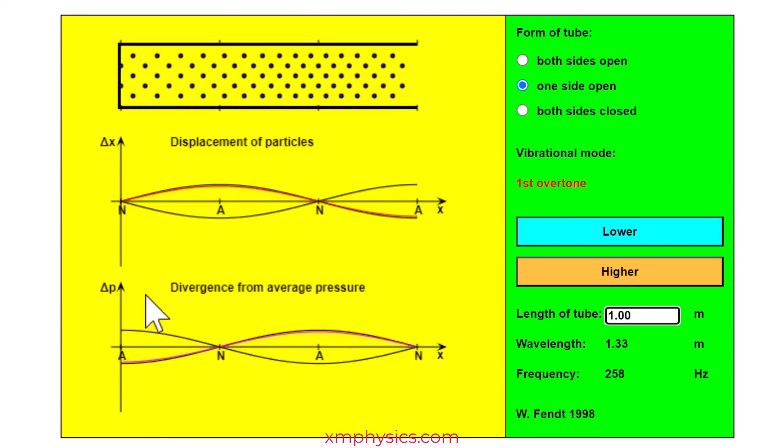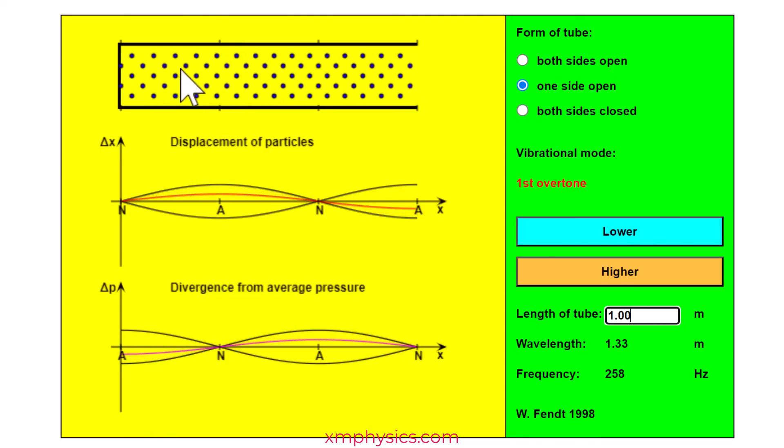Or since I've revealed to you the secrets that a compression is reflected as a compression, you realize that the incident and reflected wave will superpose to give you double compression and double rarefaction as well. That's another way to tell yourself why there's a pressure anti-node here.